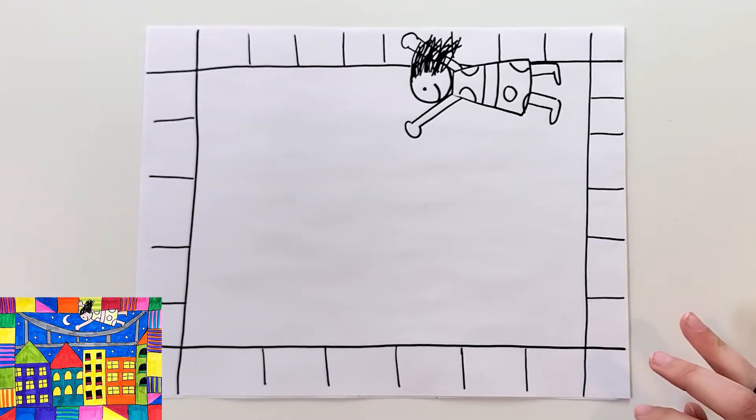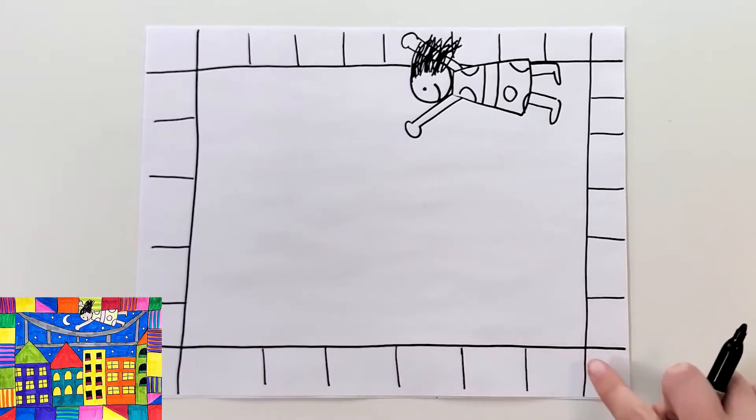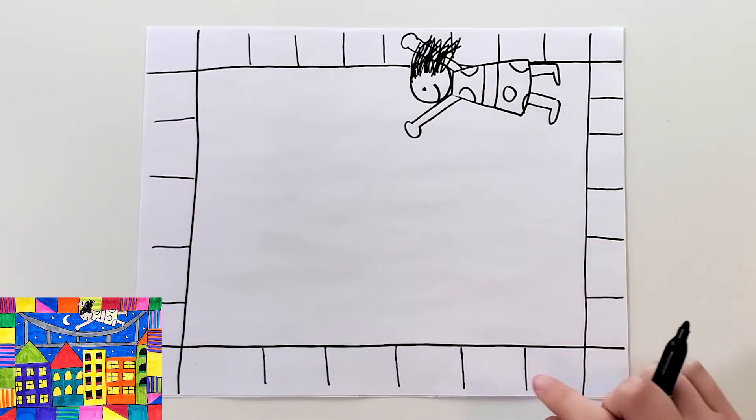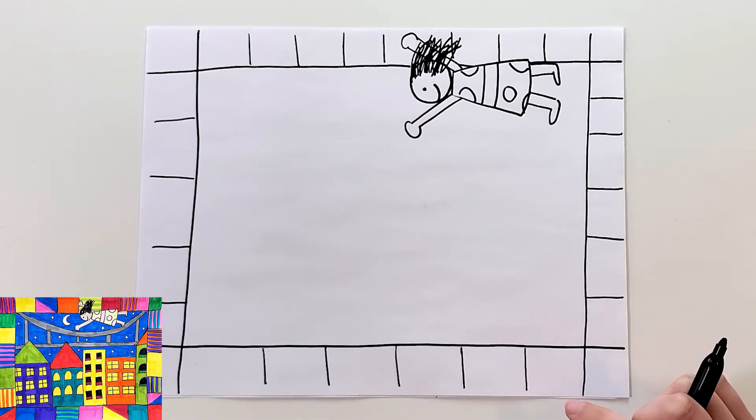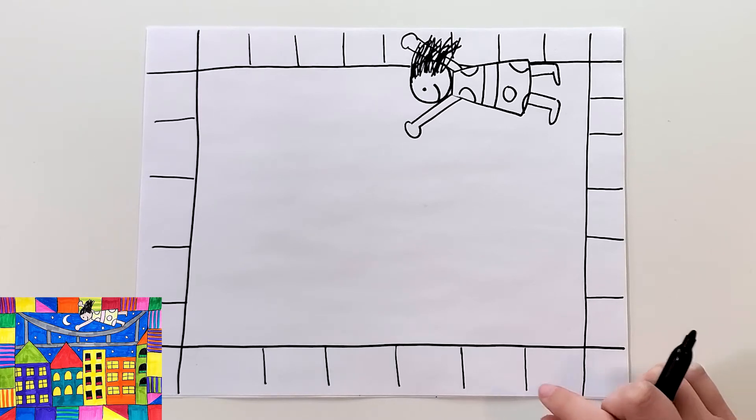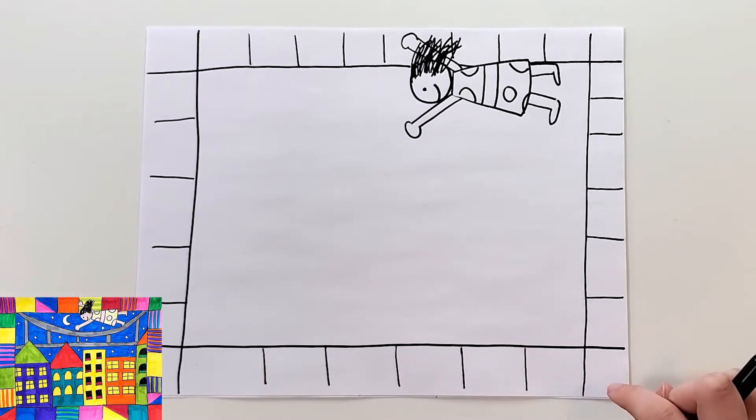At this point, I would recommend that you go in and add your colors and your designs to the border, because if you wait until the end, you might not want to do it then. You could add different patterns, designs, colors. You could even add some shapes on the border. If you want to pause the video to do that, that's a good idea. Otherwise, I'm going to continue on and show you the rest of the drawing.